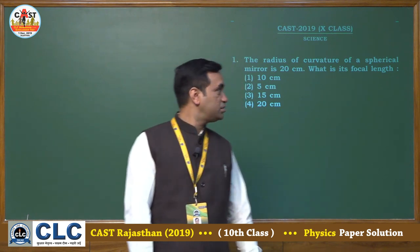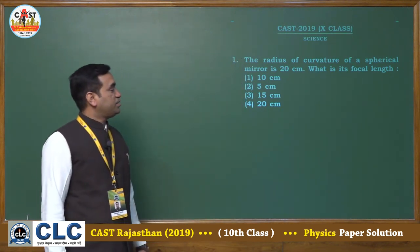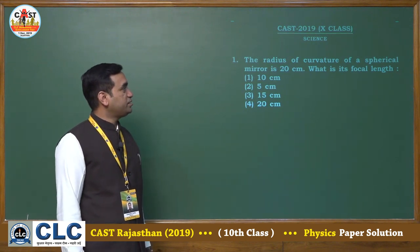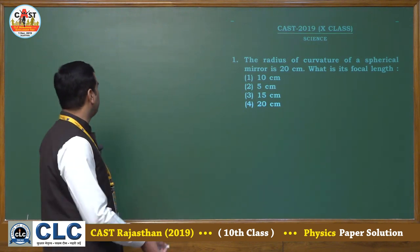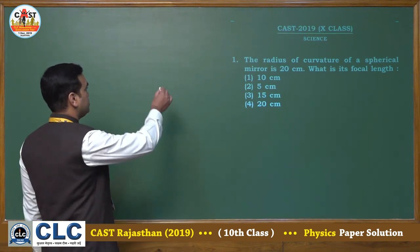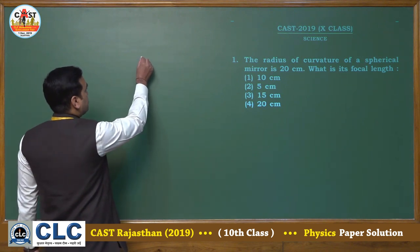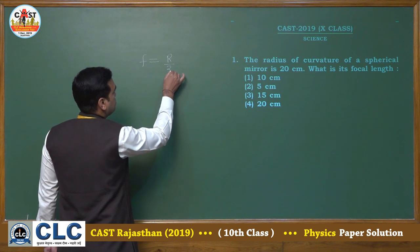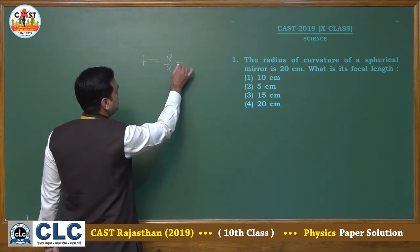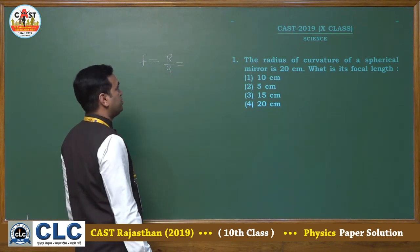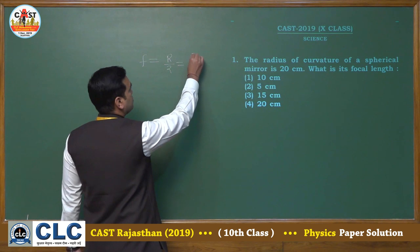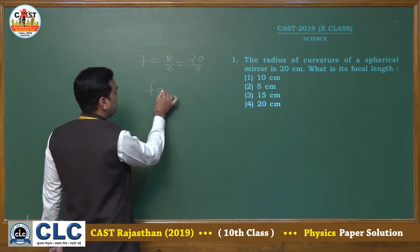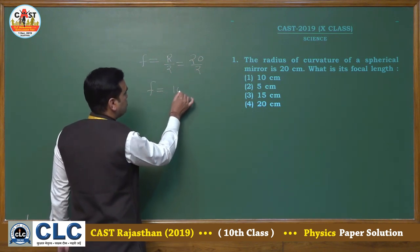The first question is: the radius of curvature of a spherical mirror is 20 centimeter, what is its focal length? We know the formula of focus F equal to R by 2, where R is the radius of curvature of a spherical mirror. The radius is given as 20 centimeter, so F will be equal to 10 centimeter.